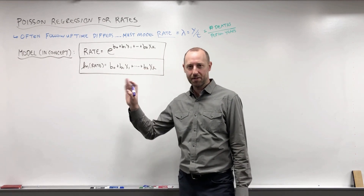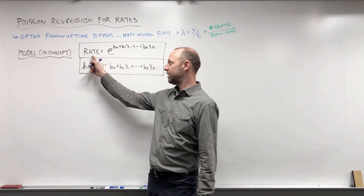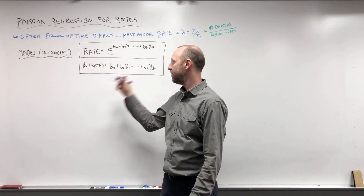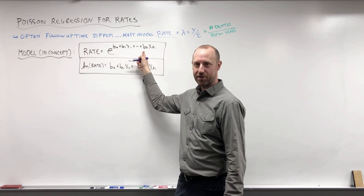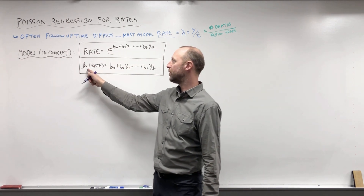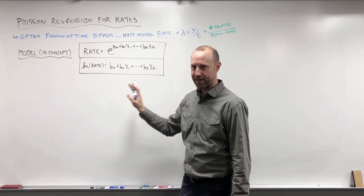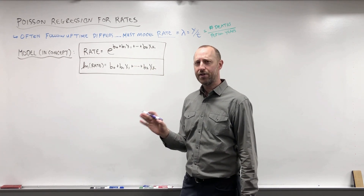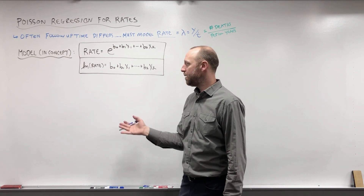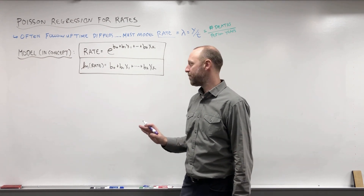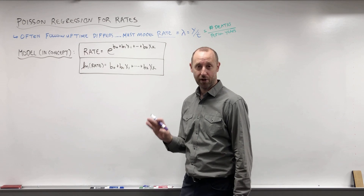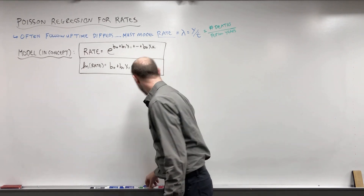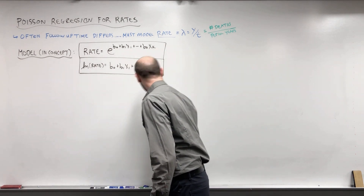The model and concept is going to be exactly the same as it was for counts — rather than modeling the count, we're going to be modeling the rate. We can think of it conceptually as modeling the rate as an exponential function of the x's, or the log rate as a linear function of the x's. There's going to be a slight difference in how it gets implemented in software: we're going to need to include something called an offset, which I'll explain in a moment.